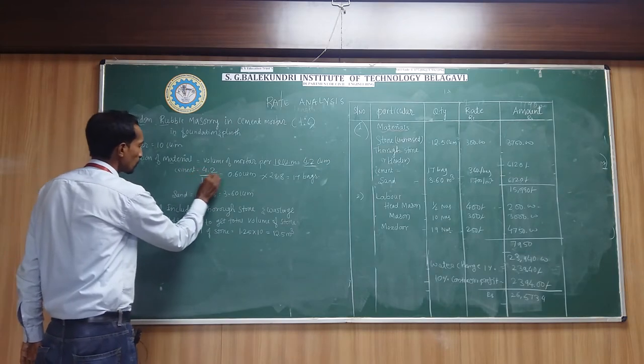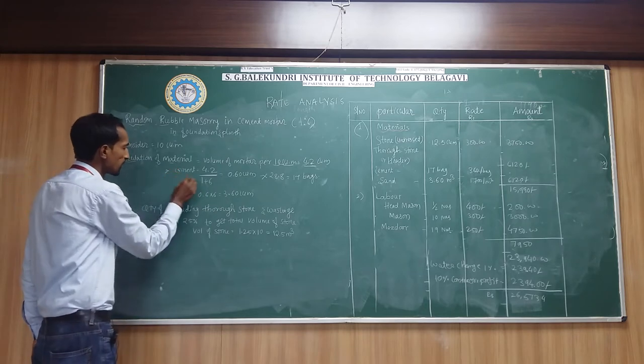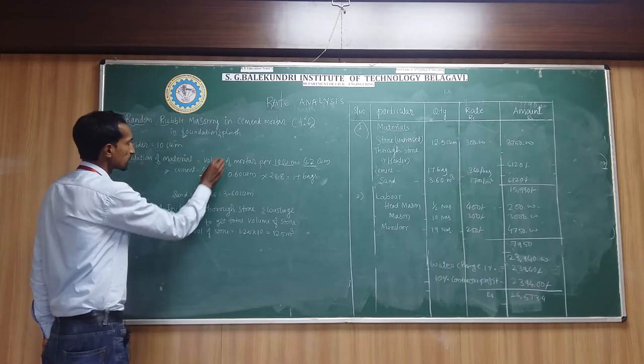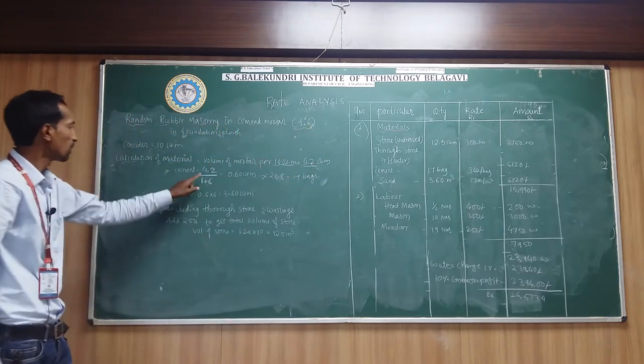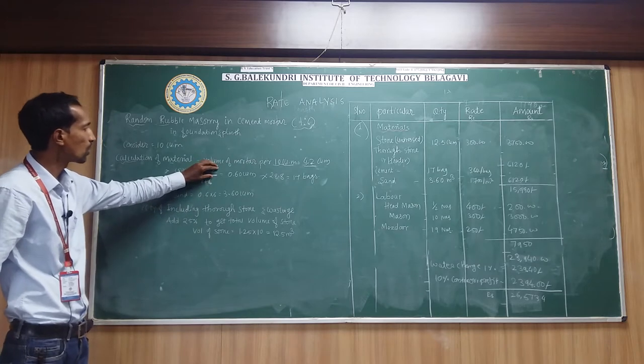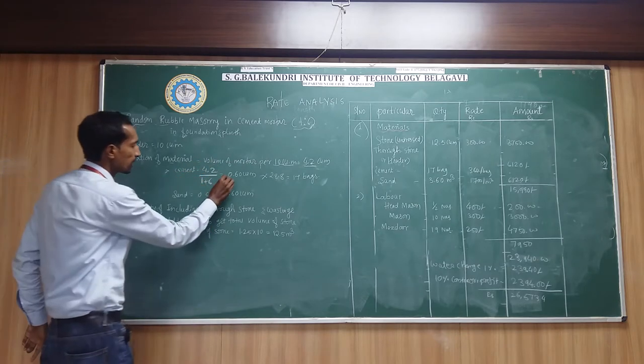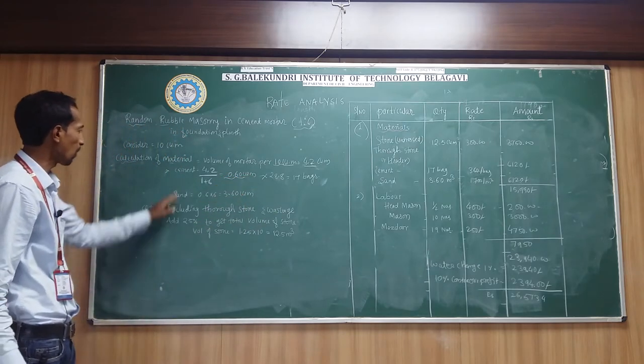By taking this 4.2 meter cube of mortar dry volume, we are going to calculate the cement here: 4.2 divided by 1 plus 6. 1 plus 6 is the ratio of cement mortar. 4.2 is the volume of mortar. 4.2 divided by 1 plus 6 you will get 0.6 meter cube or 0.60 cubic meter of cement.